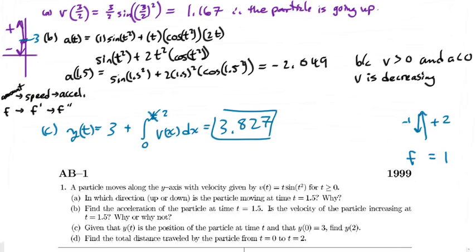To find total distance traveled, you integrate the absolute value of velocity: integral from 0 to 2 of |v(t)| dt. Let's plug that into the calculator. Y₁ is already stored as our velocity function.